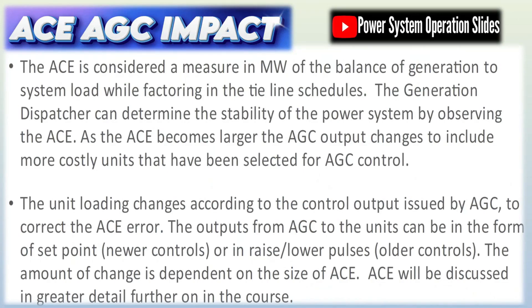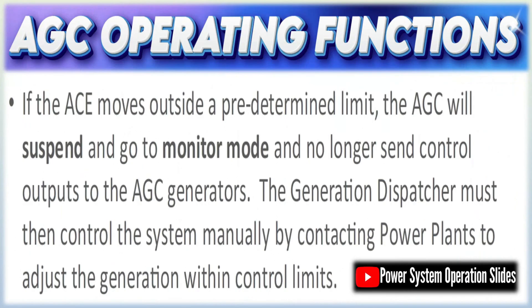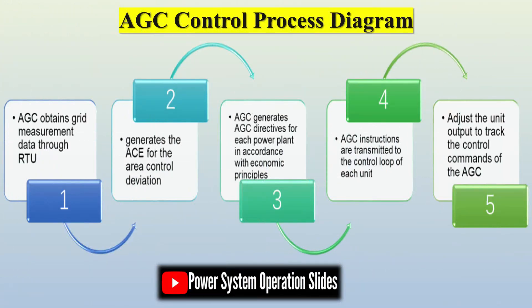The system accomplishes this through a closed-loop feedback process where measurements of frequency, power flows, and generation outputs are continuously compared with set points, and corrective signals are automatically dispatched to the generators. AGC — automatic generation control — is an integrated, computer-based system that adjusts the power outputs of generators in multiple plants if needed to ensure that the total generation matches the instantaneous demand. By doing so, AGC maintains overall system stability and minimizes deviations in both frequency and scheduled power interchanges. Area control error, A.C.E., is the key error signal in AGC.